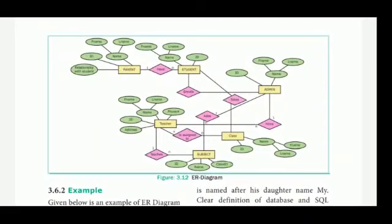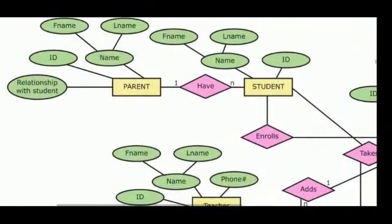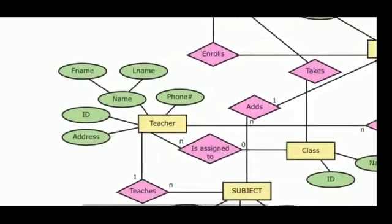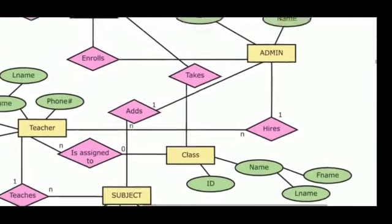Here is an example diagram. You can see the entities: Parent, Student, Teacher, Subject, Class, and Admin, shown in green color.